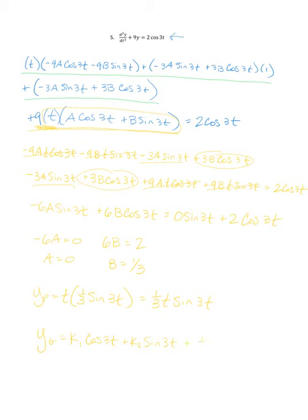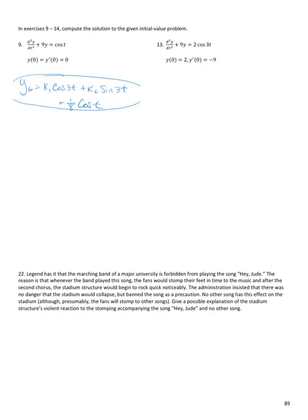The general solution for number 5 is y_g = k1·cos(3t) + k2·sin(3t) + 1/3·t·sin(3t).